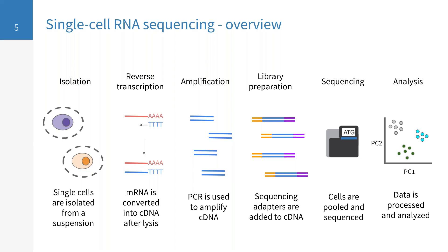The cDNA is subsequently amplified using PCR in order to generate enough cDNA for sequencing. Before these amplicons can be sequenced, they need to be processed with an additional step which adds sequencing adapters to the ends of these cDNA molecules such that they are able to bind to the sequencing flow cell. Next, cells are pooled and sequenced, typically on an Illumina instrument, generating short reads anywhere from 2×75 to 2×300 base pairs. Lastly, the sequencing data is analyzed for gene expression, splicing, clustering, and so forth.